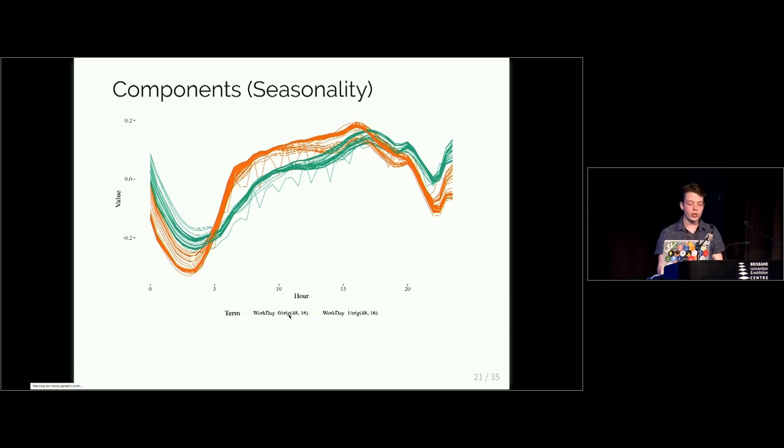Here I've extracted my trig terms for working days and non-working days and you can see there's a slightly different pattern. On working days people tend to use a lot more electricity in the morning compared to non-working days, except this changes during the middle of the day where the work days can use more electricity. So there's different patterns and that's essentially justifying the use of seasonal switching.